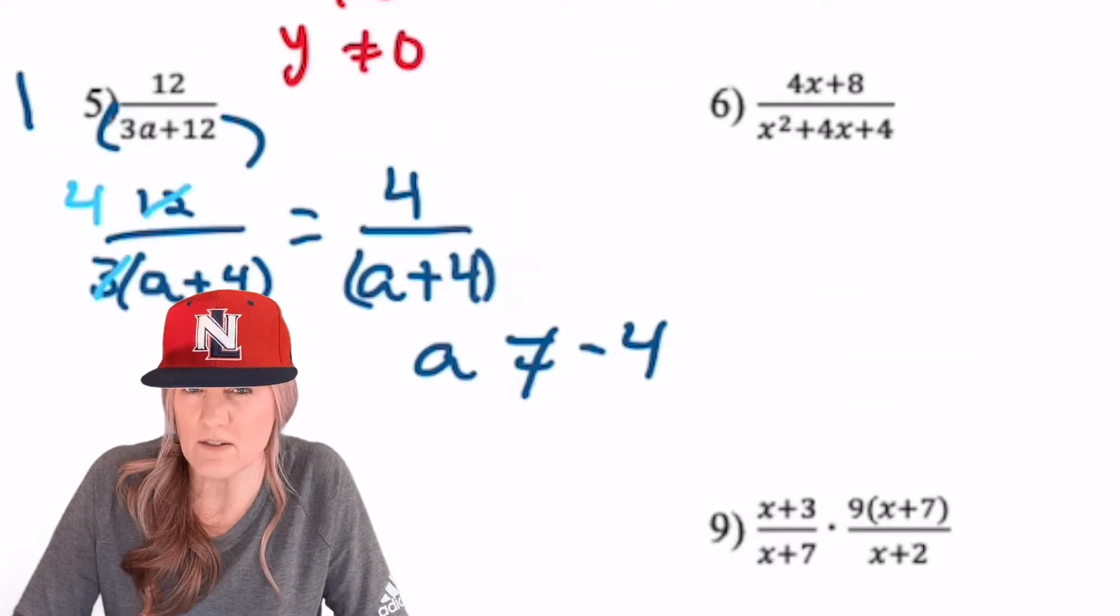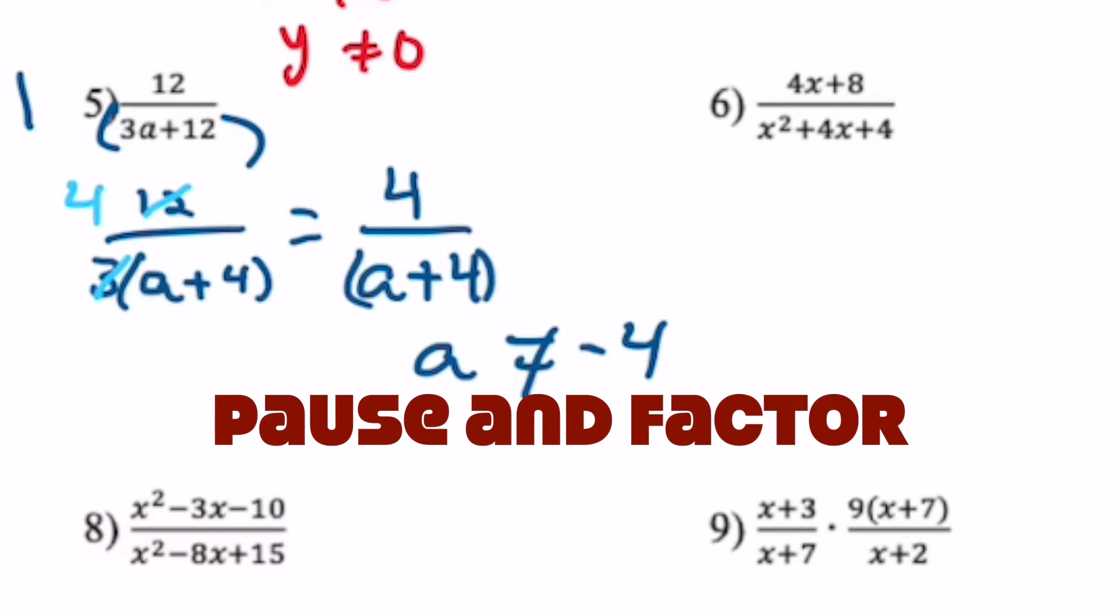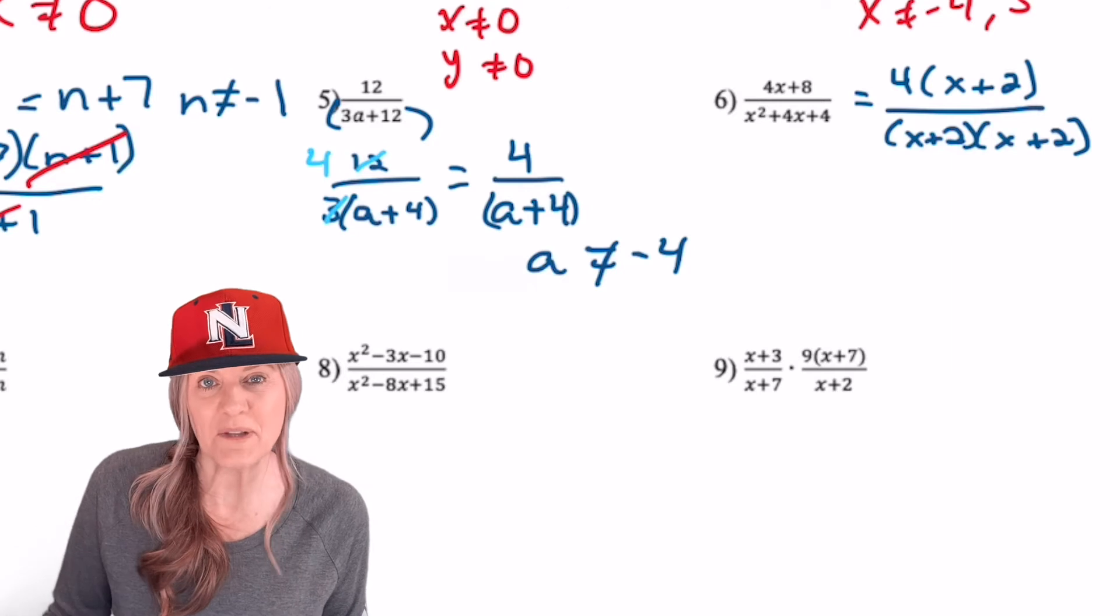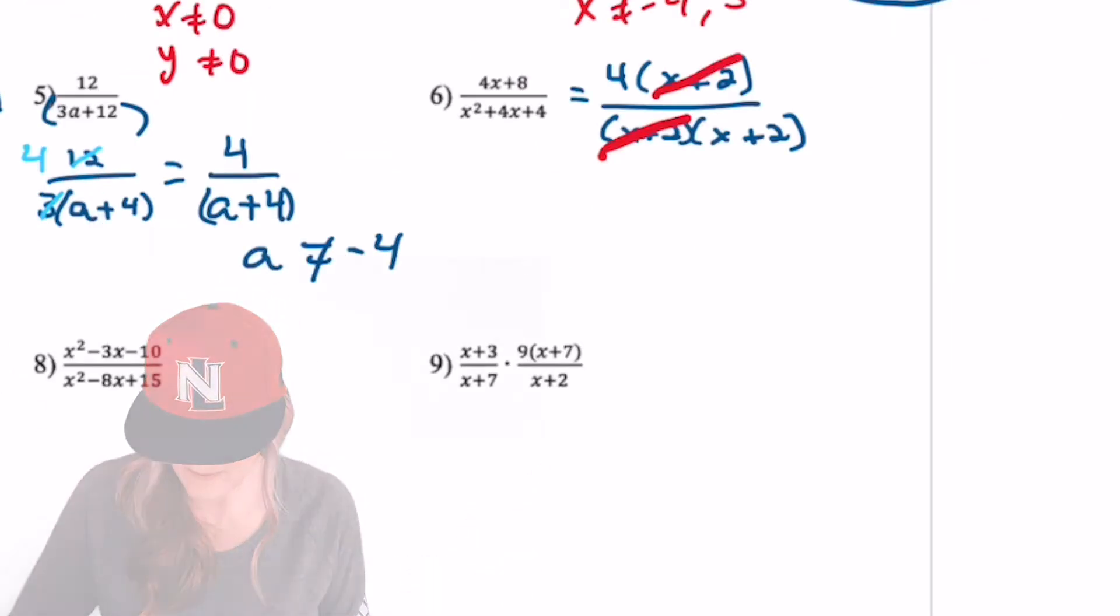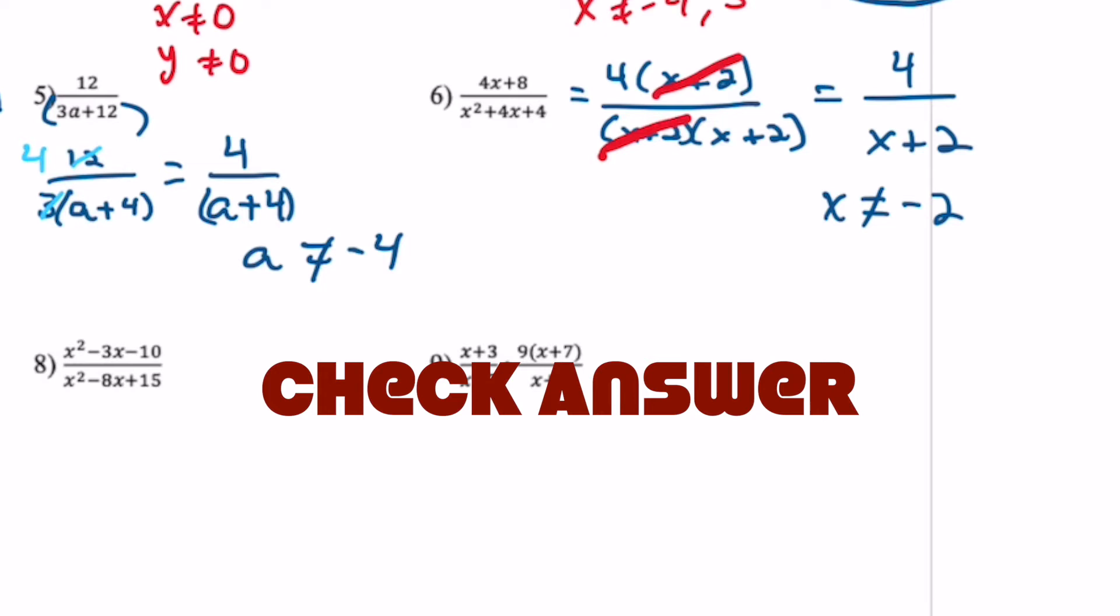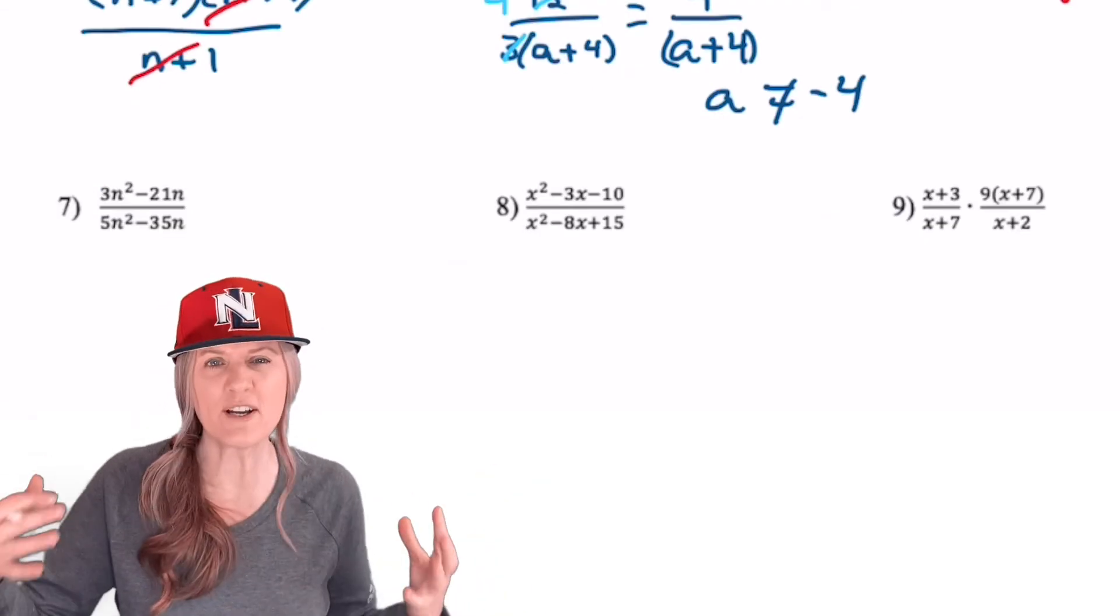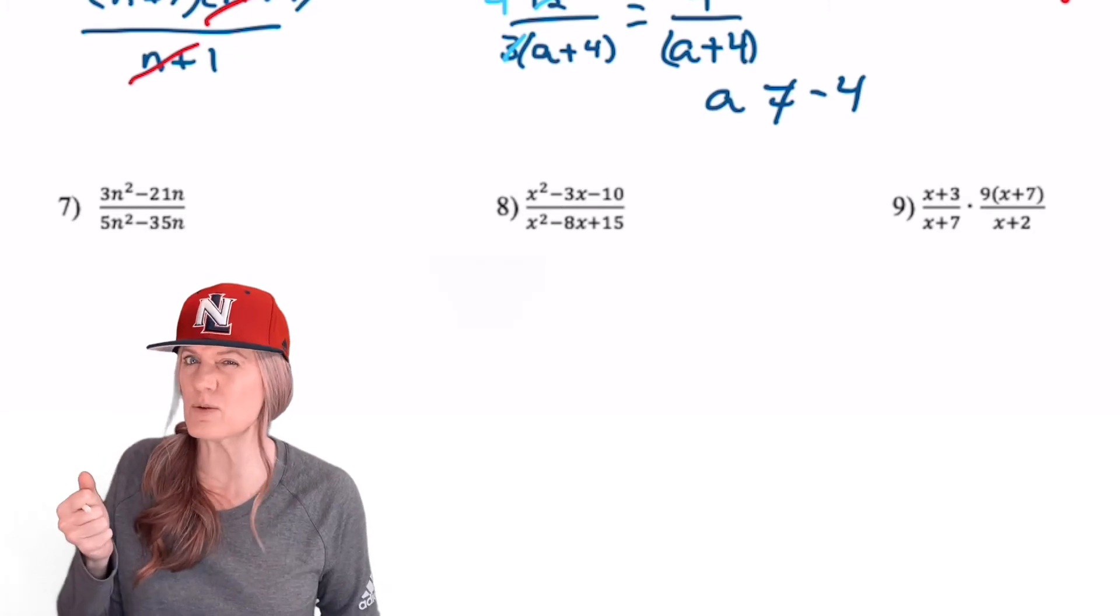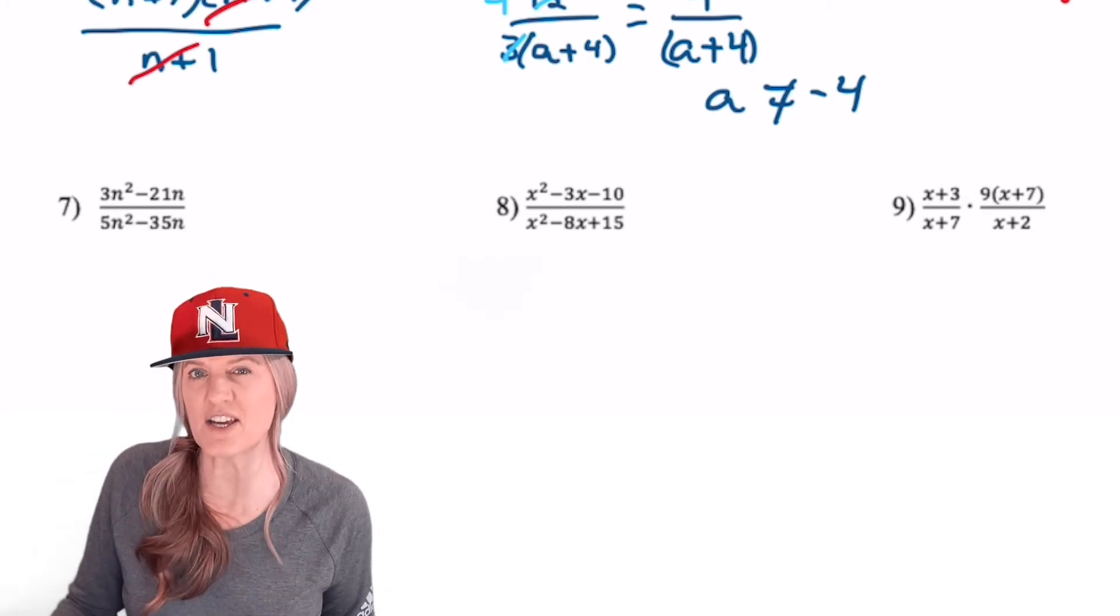Are you feeling lucky on this next one? Factor and simplify. How many of the x plus 2s divide out? Only one will divide out! Take a look at number 7. What can we do? GCF. For example, in the numerator I can pull a 3n out. I want you to finish 7, 8, and 9. Come back and check once you're done.